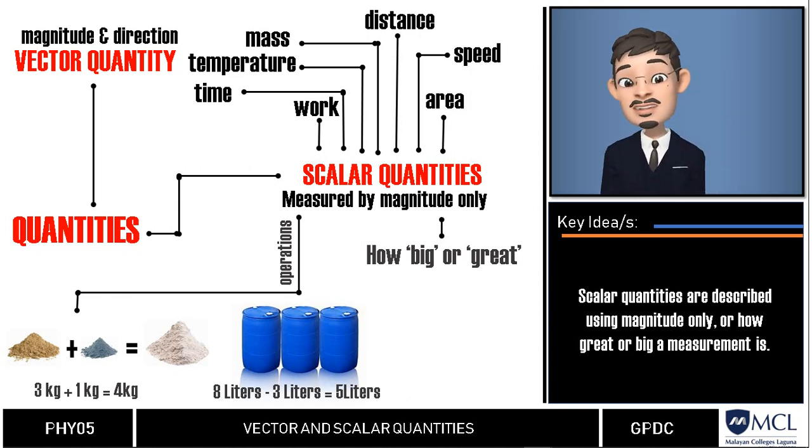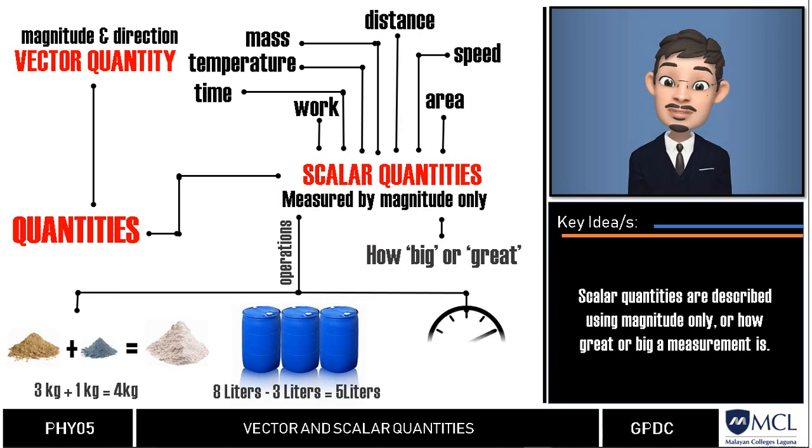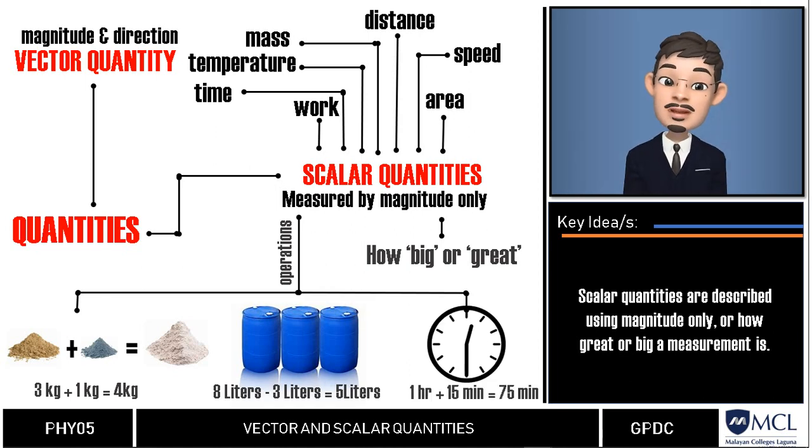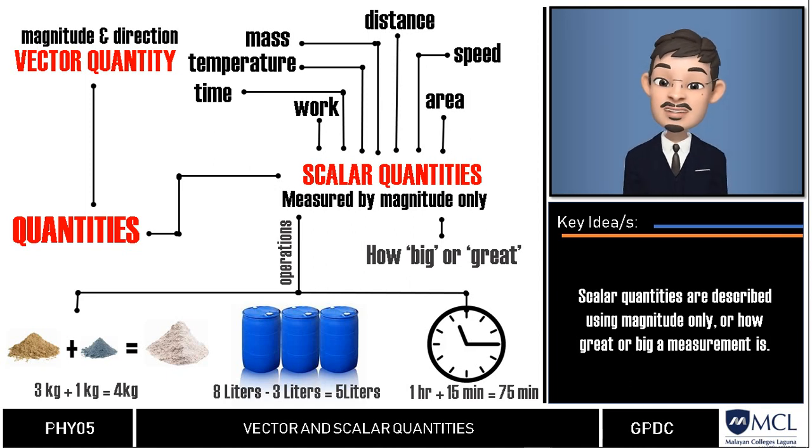Or if your scheduled trip has a 15-minute delay, the trip takes 75 minutes. In each of these cases, no direction is involved. We see that the descriptions such as 10 kg north or 5 liters east or 15 minutes south have no meaning, right?